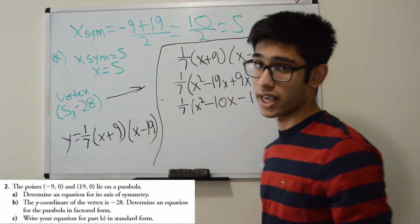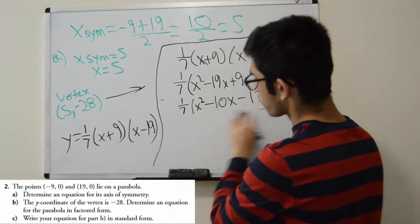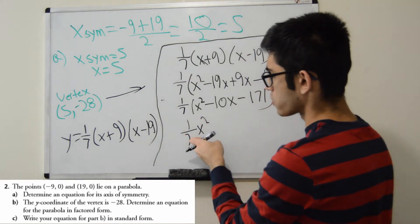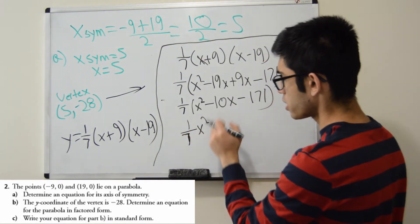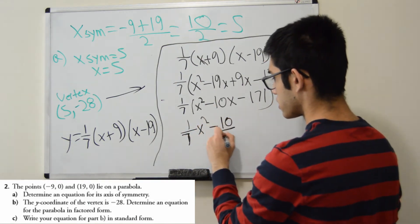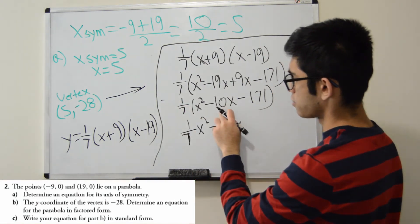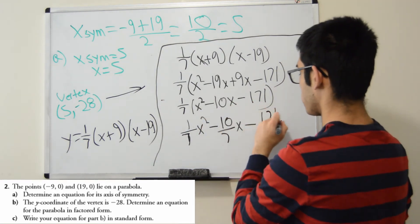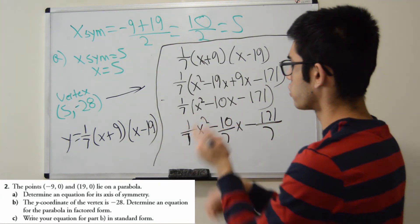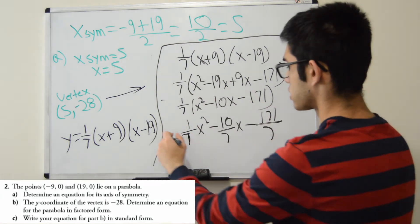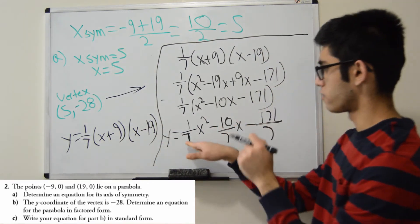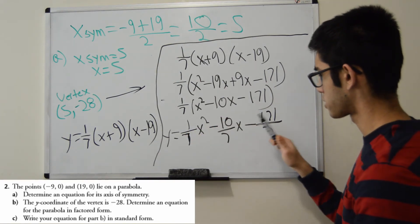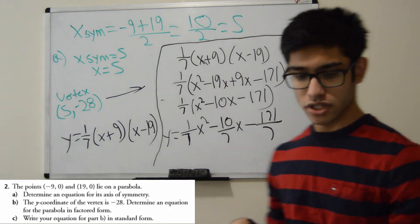Now we have a quadratic equation in here, and we have the 1/7 on the outside. Well, what do we do with the 1/7? Now we have to bring it in. So to bring it in, I multiply the 1/7 by everything in here. So 1/7 times x squared is simply 1/7 x squared. -10/7 x. I'm just multiplying 1/7 times 10x. So that's -10/7 x. And then -171/7 as well. You're just dividing everything by 7 essentially. This is what the equation in standard form looks like. 1/7 x squared - 10/7 x - 171/7. So there we go. That's this entire question done.